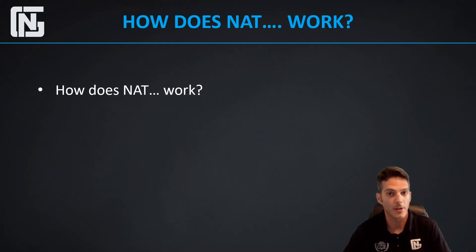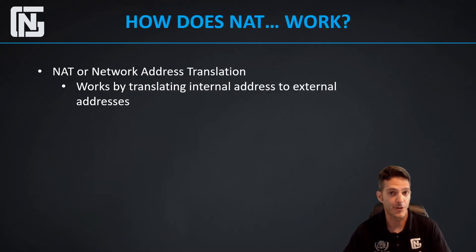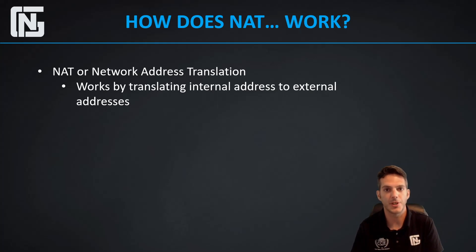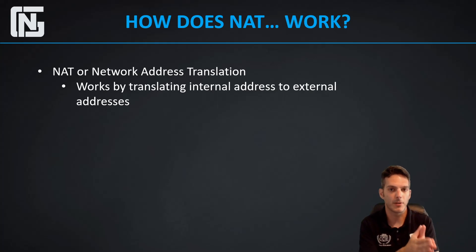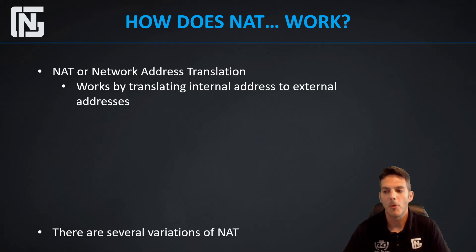NAT, or Network Address Translation, works by translating internal addresses to external addresses. The RFC 1918 address space — the 10.0.0.0 network, the 172.16 through 172.31 network, and the 192.168 network — those networks are not routable on the public internet. So if you're using any of those address ranges internally, they need to be translated from the private space over to the public space so that they can be routed on the internet.